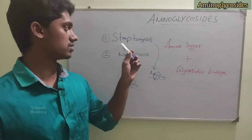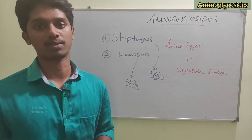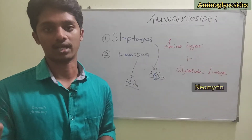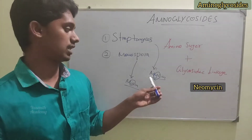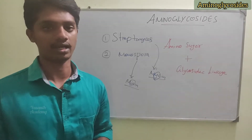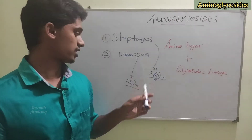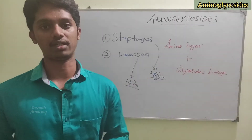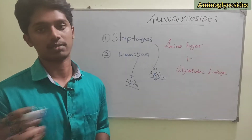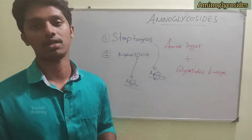For example, from Streptomyces species: streptomycin, neomycin, kanamycin, tobramycin — all use mycin, M-Y-C-I-N. Where Micromonospora is the source, the example is gentamicin — spelled M-I-C-I-N, not M-Y-C-I-N.